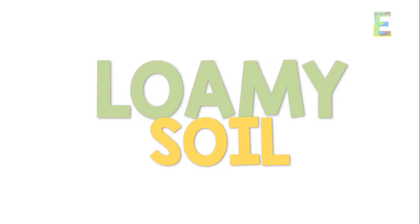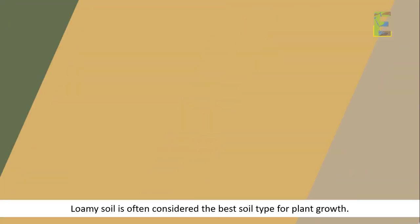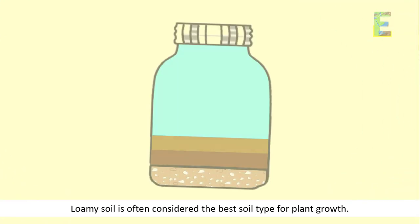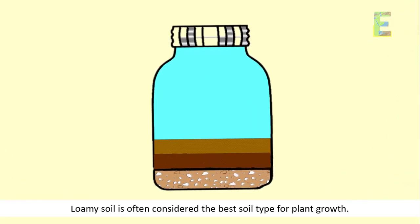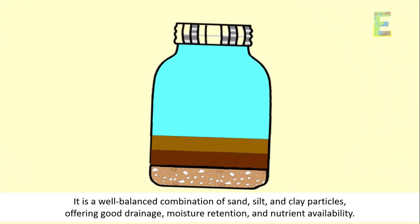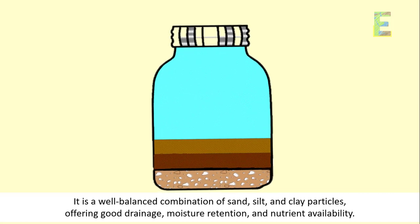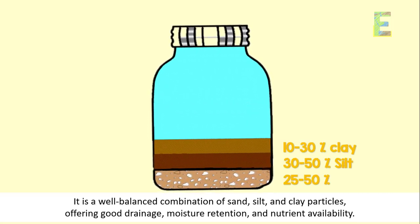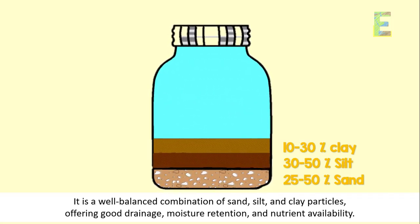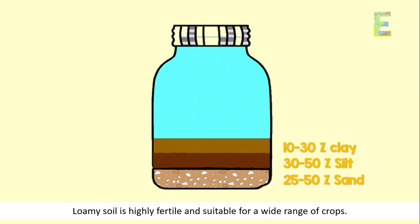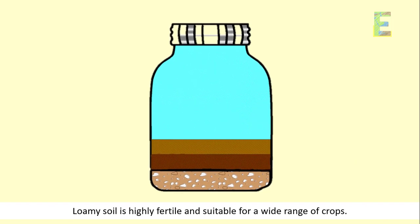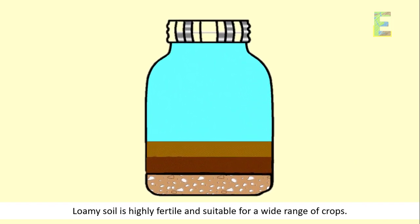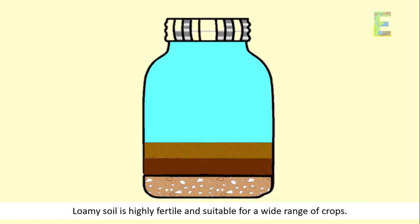Loamy Soil. Loamy soil is often considered the best soil type for plant growth. It is a well-balanced combination of sand, silt, and clay particles, offering good drainage, moisture retention, and nutrient availability. Loamy soil is highly fertile and suitable for a wide range of crops.